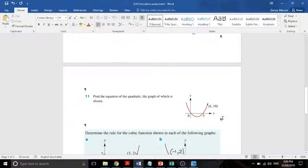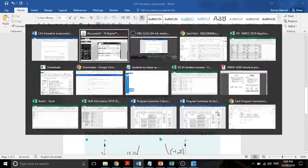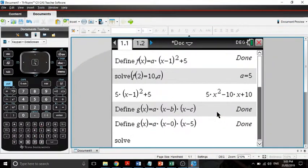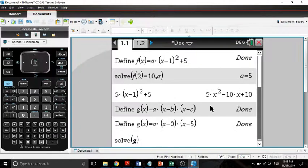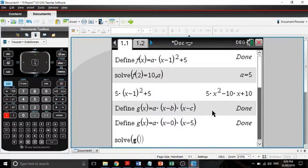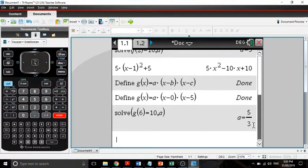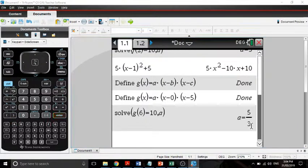Now, we're going to use this point here, 6 and 10. So once again, we're going to say, solve g of 6, close it, open bracket, 6, close the bracket, equals 10. And we're solving for a. And it tells us a is 5 over 3.